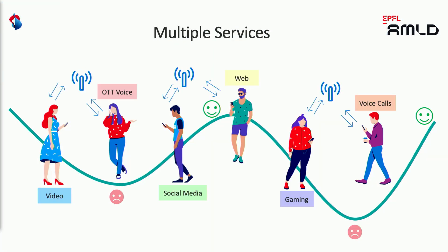A second complexity dimension is about services. Nowadays a mobile network is used by the end user to access different kinds of services, like social media, gaming, web, video, and of course voice calls. Each of these services has different technical requirements in terms of latency, throughput uplink and downlink, and reliability.